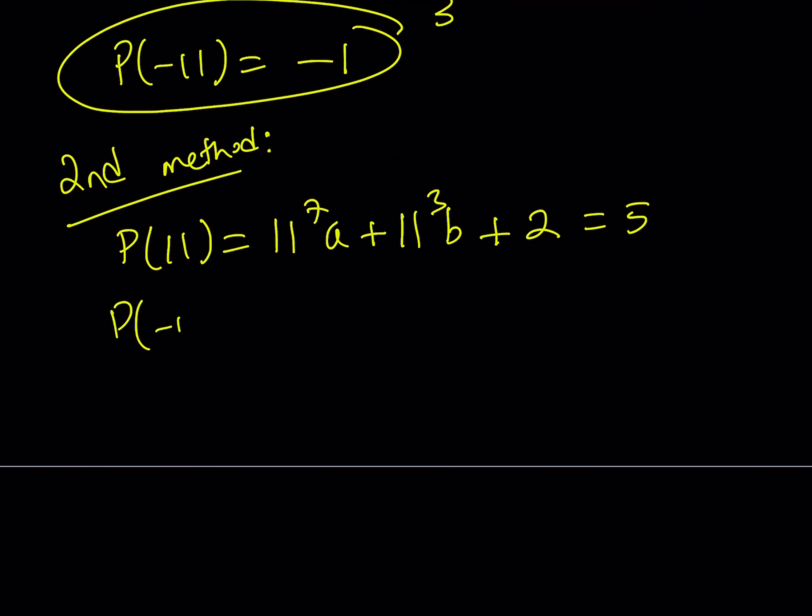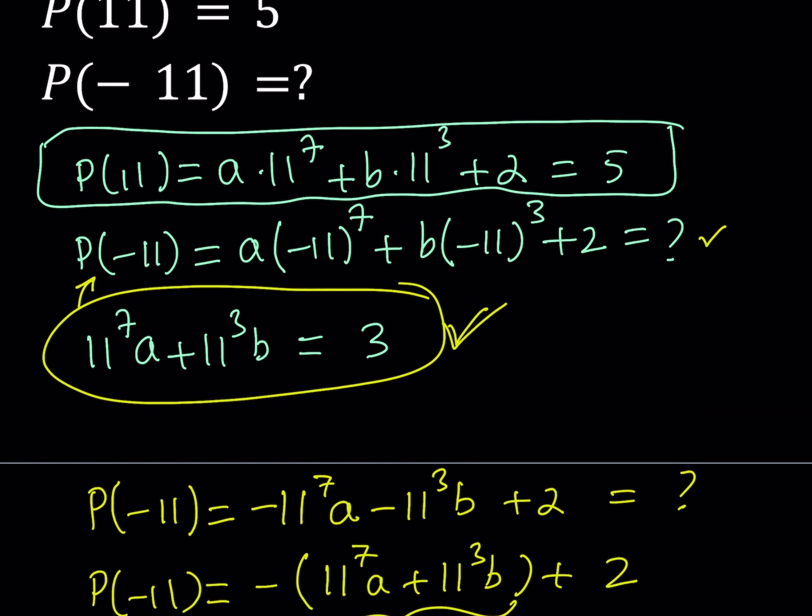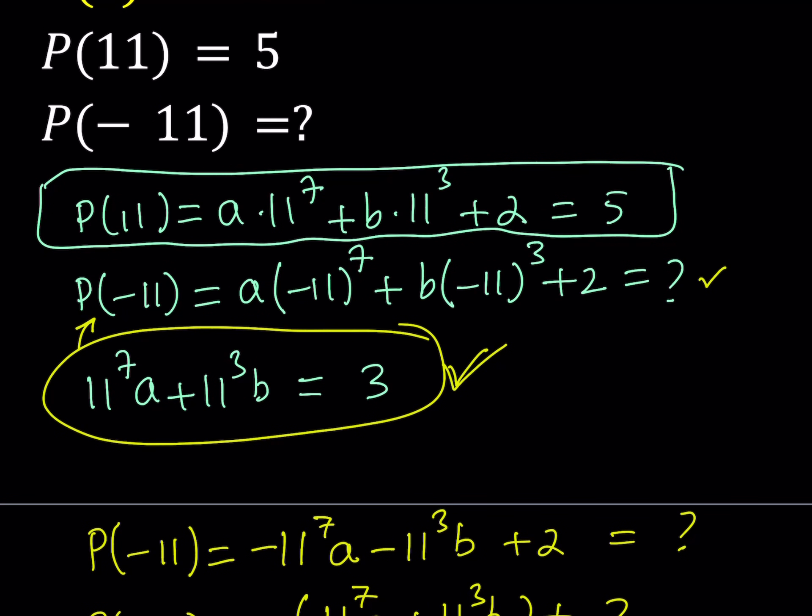And I'm trying to find P of negative 11. Let's write down P of negative 11. That could be written as negative 11 to the 7th A plus, actually that should be a minus sign, minus 11 to the 3rd B and then of course plus 2. Notice that 2 is a constant so we're always going to add the 2 at the end.